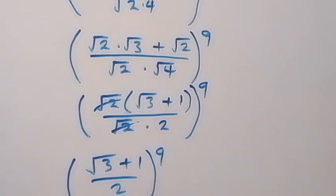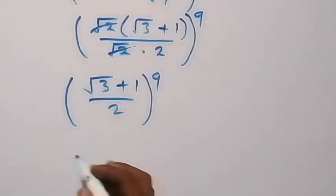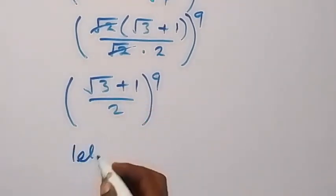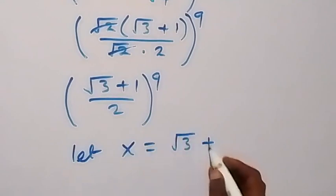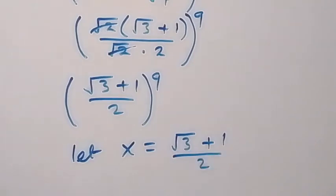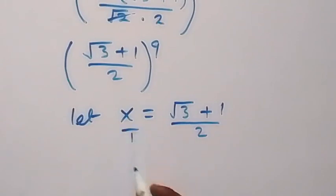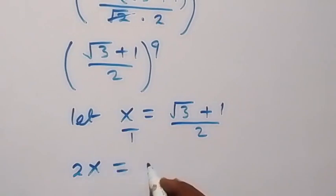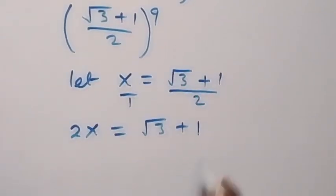What we have left now is simply (root 3 plus 1) over 2, all raised to power 9. From here, let x represent what we have inside the bracket, so x equals (root 3 plus 1) over 2. When we cross multiply, we have 2x equals root 3 plus 1.